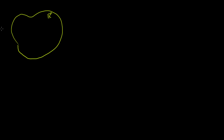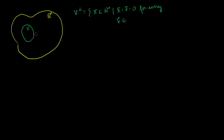Let's say I have some subspace of Rn called V. That is Rn, and I have some subspace of it that we'll call V right here. We know that the orthogonal complement of V is equal to the set of all members of Rn, so X is a member of Rn, such that X dot V is equal to 0 for every V that is a member of our subspace. So our orthogonal complement is all of the vectors that are orthogonal to all of these vectors. And we've seen before that they only overlap at the 0 vector. Let's say the orthogonal complement is this set right here in pink.